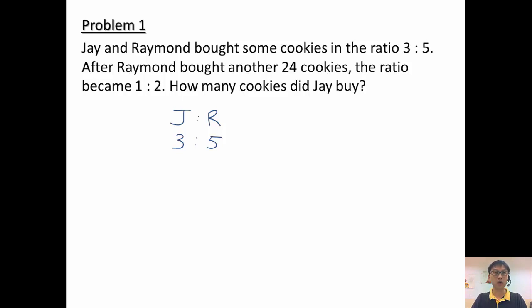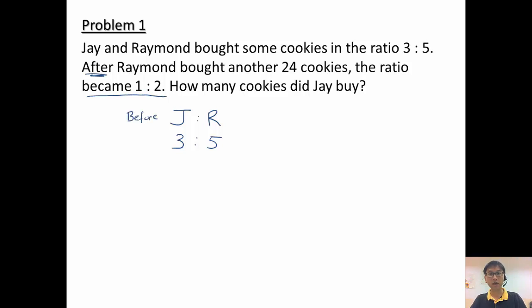The keyword here is 'after'. After Raymond bought another 24 cookies, the ratio became 1 to 2. So something changed. This is the before ratio — Jay to Raymond is 3 to 5. After, Jay to Raymond becomes 1 to 2. We want to find how many cookies Jay bought.